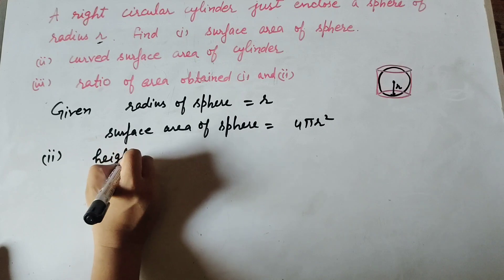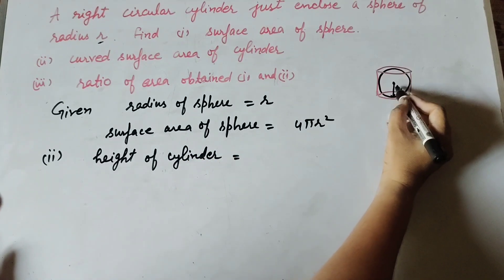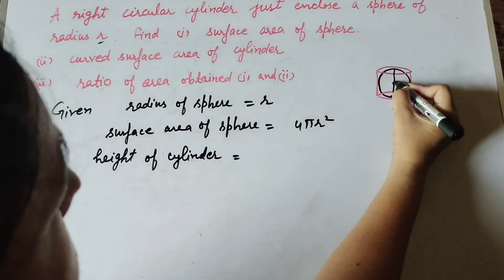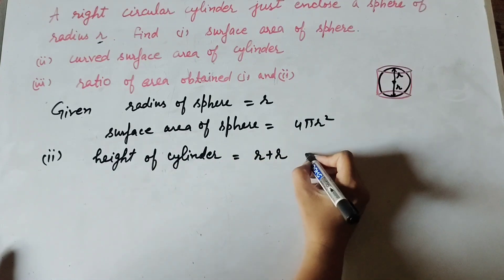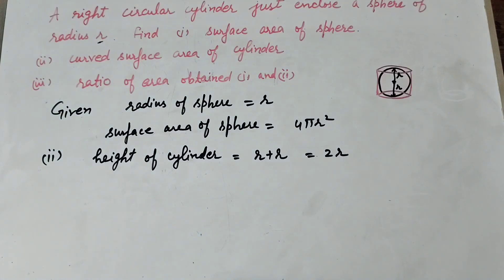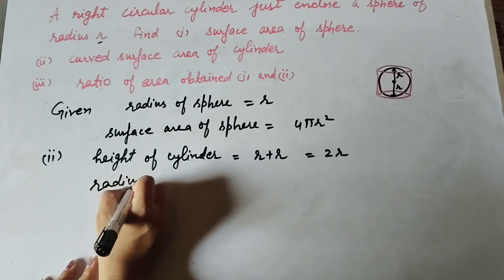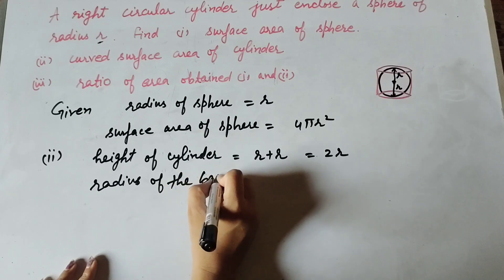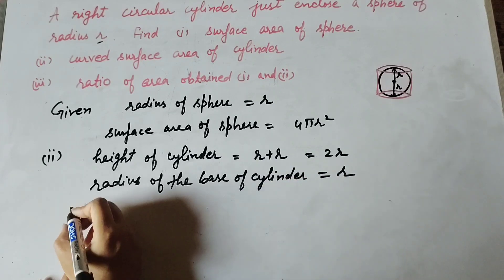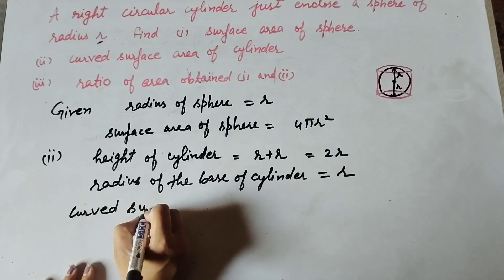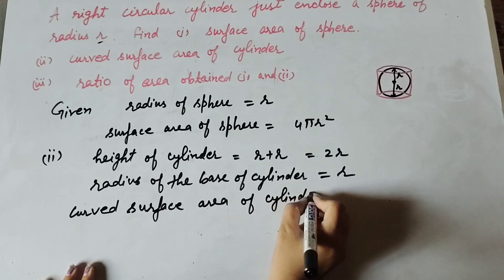Find the curved surface area of the cylinder. To find the curved surface area of the cylinder, we need to find the height of the cylinder. In the given figure, the sphere is enclosed in the cylinder with radius r, so the height of the cylinder is r plus r, which equals 2r. The radius of the base of the cylinder is also equal to r.